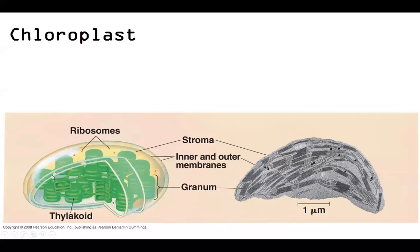We still need a lot of surface area to do these photosynthetic reactions. But instead of folding the inner membrane, we get the surface area by producing these little discs of hollow membrane — sort of like a flattened bubble, hollow inside but pressed flat — giving us that membrane surface area that we need.